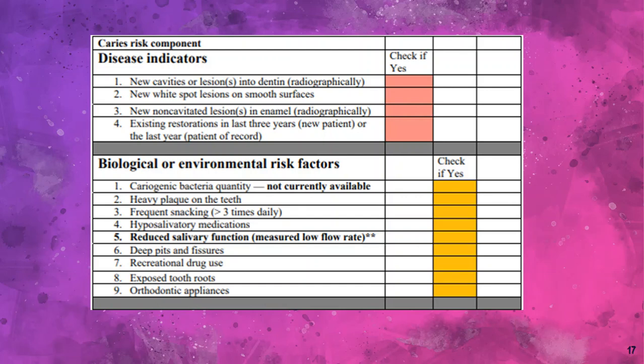Disease indicators include new caries activity lesions, new white spot lesions on smooth surfaces, new non-cavitated lesions in enamel, and existing restorations placed in the last 3 years or last year. Presence of any of these indicators places the individual in the high risk category.